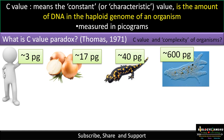This indicates that C value has nothing to do with the complexity of an organism or the gene number within an organism. This is called a paradox. The second point is that C value is constant in different individuals of the same species, and also within different cells of an organism — this is DNA constancy.